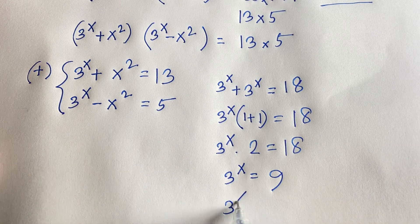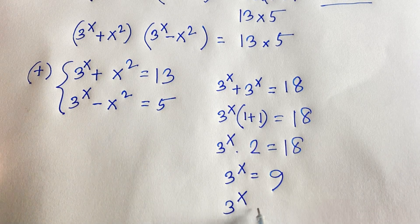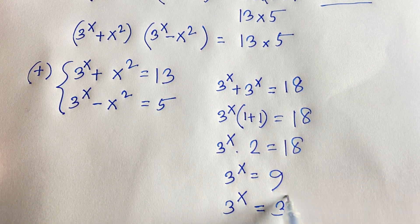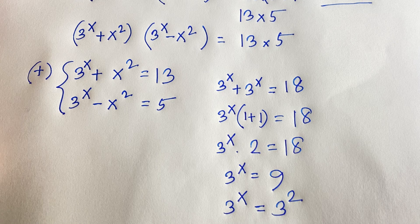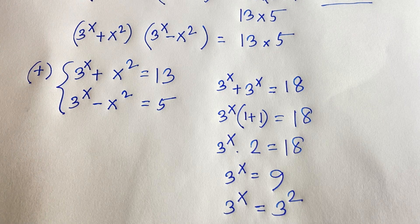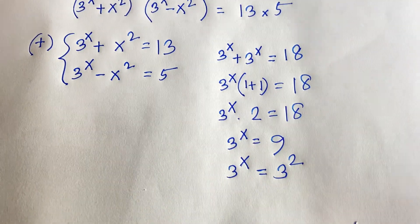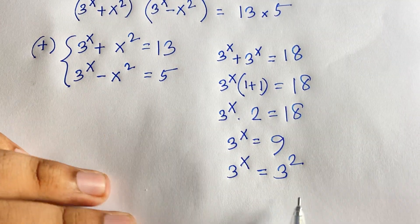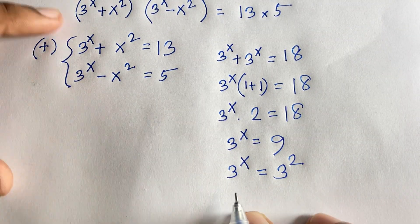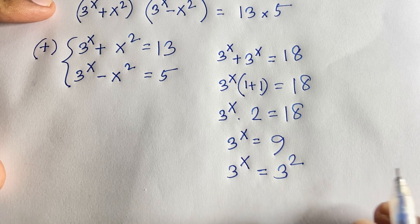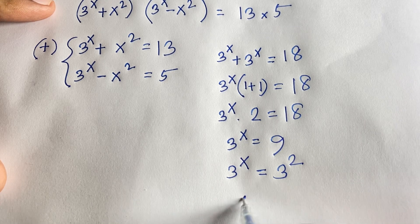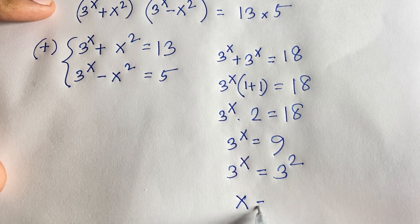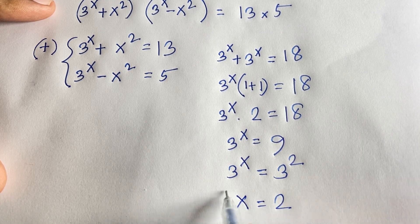We have 3^x equals 9, which is 3 to the power 2. Since the bases are the same, by exponential rules the exponents must be equal, so x equals 2. This is our final answer.